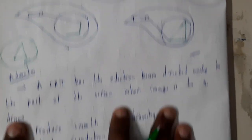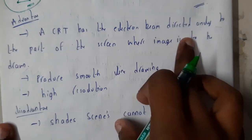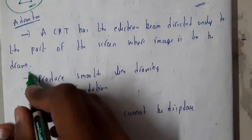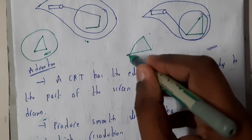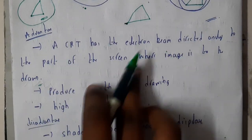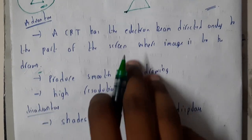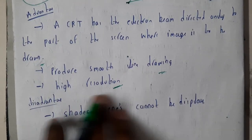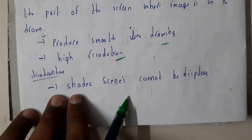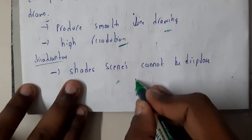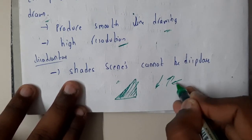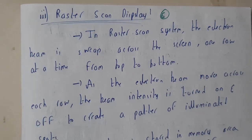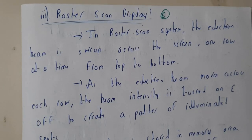The advantage of this is that the electron beam is directed onto only the part of the screen where the image is drawn. You are directly projecting to that point and drawing the triangle - you are not wasting time searching for any point. So this is a best method, a smooth drawing method, and you get high resolution. The one disadvantage is that shading scenes is not possible - you cannot do light shading, high shading, or dim shading inside the drawing. In the next video we'll be going through raster scan display. Thank you for watching.